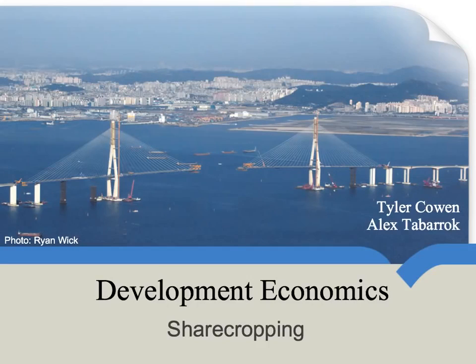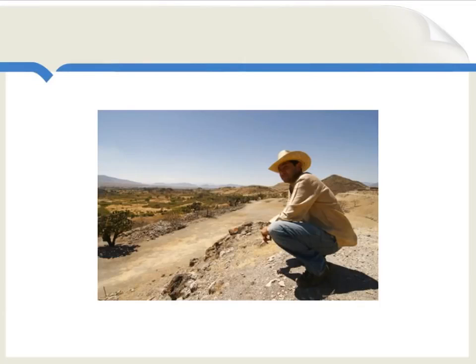We're going to do some simple economic theory by looking at sharecropping, or in more theoretical terms, this could be called principal-agent theory. Imagine a simple setting where there's a farmer who works on some land and there's a separate landowner. The person working the land and the landowner have to get together and write some kind of contract to determine how the proceeds from that land will be shared. This is the basic problem of sharecropping.